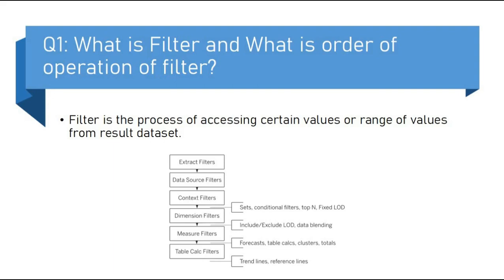The order of operation of filter is the sequence in which the filter is applied. The first filter we apply on data is extract filter, then data source filter, then context filter, then dimension filters, then measure filter, then table calc filter.